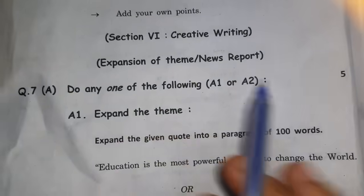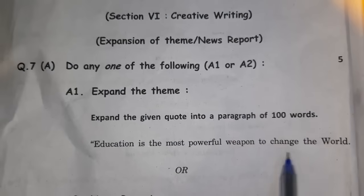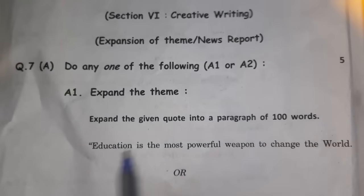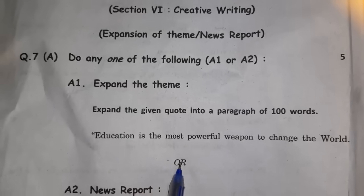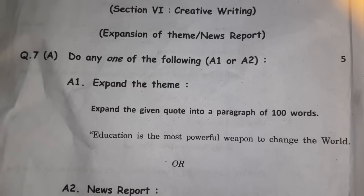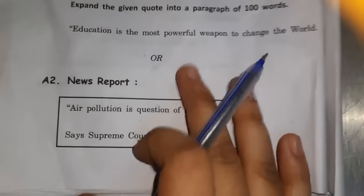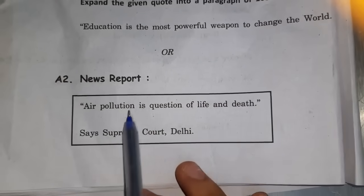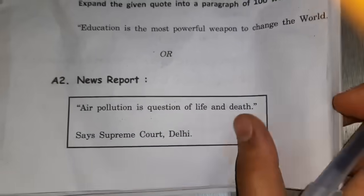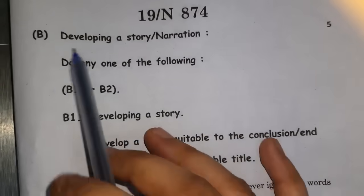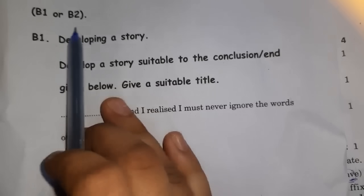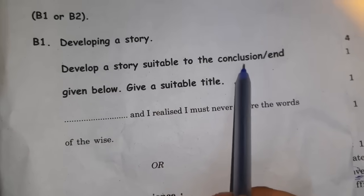Next: creative writing — expansion and news. The topic was: 'Education is the most powerful weapon to change the world.' This was not a proverb, this was a slogan. It is a very easy quote that you can understand everything from. Expansion writing will be easy. Next: news report was easy — 'Air pollution is the question of life and death, says Supreme Court Delhi.' That topic was the whole report. Next: develop a story with a suitable title. Here it was clearly mentioned to write conclusion with the given beginning and give yourself a title.